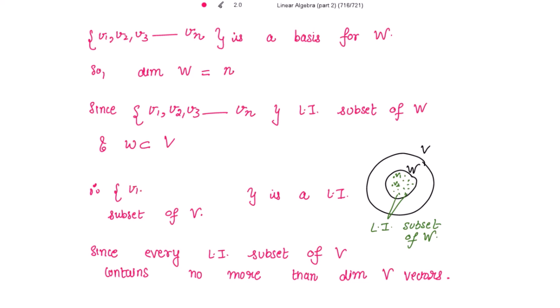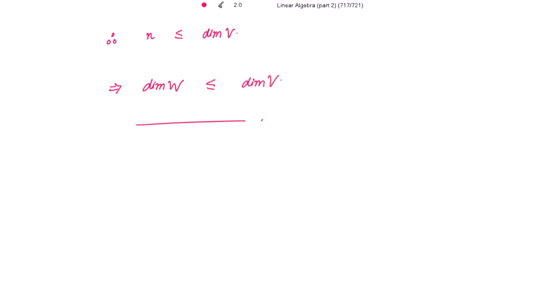So {v1, v2, ..., vn} is a linearly independent subset of V. Now, every linearly independent subset of V contains no more than dim(V) vectors. Therefore n ≤ dim(V). Since n is the dimension of W, this implies dim(W) ≤ dim(V). Hence the result is proved.